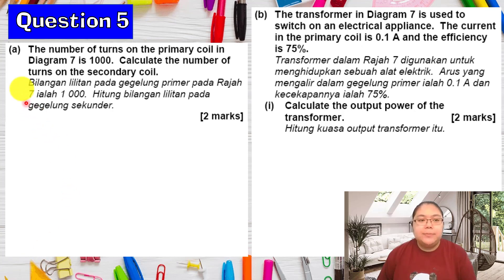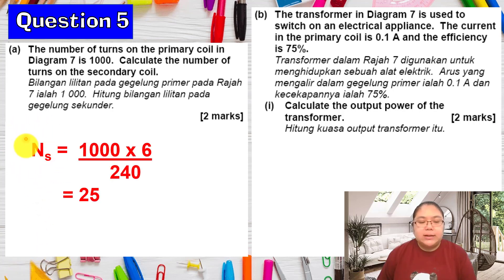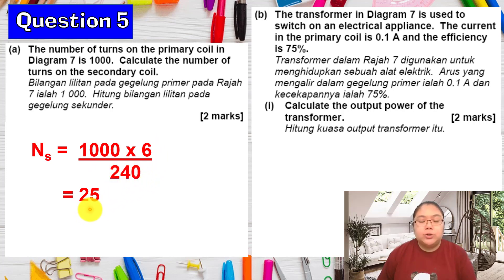Then we continue to question A. The number of turns of the primary coil is 1000. Calculate the number of turns of the secondary coil. We know the input voltage is 240V and the output voltage is 6V. The number of turns for the secondary coil equals the number of turns for the primary coil multiplied by the output voltage over the primary voltage. So we get the number of turns for the secondary coil should be 25 — there is no unit because number of turns is just a number.